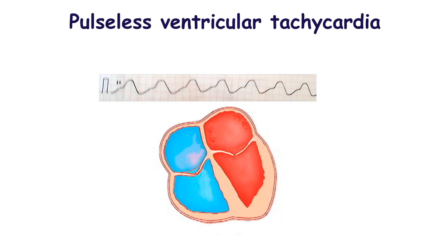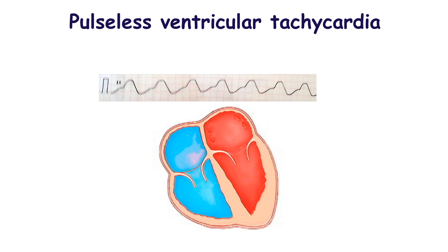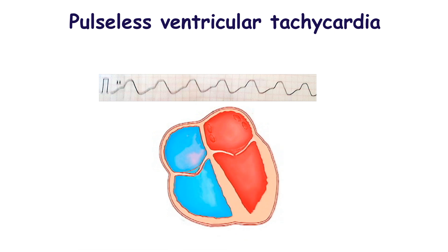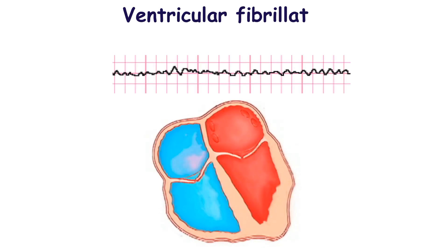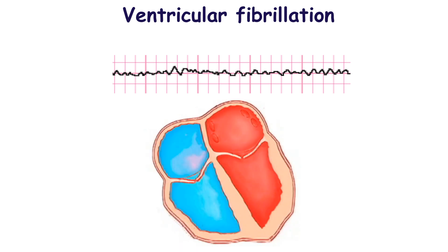Pulseless ventricular tachycardia causes ventricular contractions so frequent that there is no time for the heart to refill. This results in insufficient blood flow to tissues and an undetectable pulse. Ventricular fibrillation is defined as quivering of the ventricular walls, with frequent fine waves of different amplitude and frequency seen on ECG.